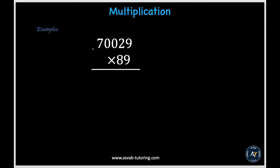In this last multiplication example, we have 70,029 times 89. We will use the same method — take the ones digit and multiply it with every digit of the first number, then move on to the tens digit. So 9 times 9 gives us 81; put down the 1 and carry over the 8. Then 9 times 2 gives us 18, and 18 plus 8 gives us 26; put down the 6 and carry over 2. Then 9 times 0 in the hundreds place gives us 0, plus 2 gives us 2. Then 9 times 0 in the thousands place gives us 0. Finally, 9 times 7 gives us 63.